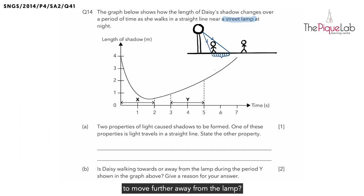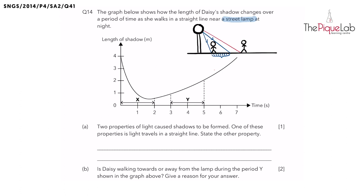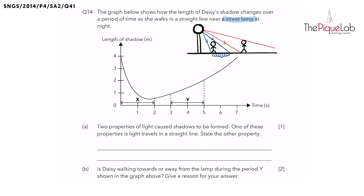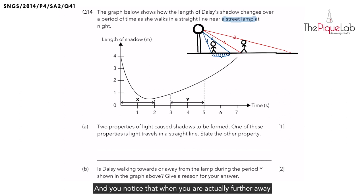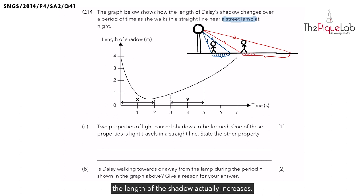Now what happens if you were to move further away from the lamp? The length of the shadow actually changes. We're going to have light from the light source and draw how the length of the shadow changes. You notice that when you are further away from the lamp, the length of the shadow actually increases.